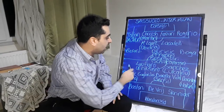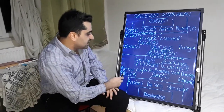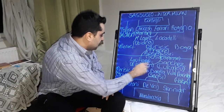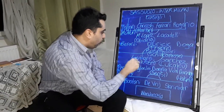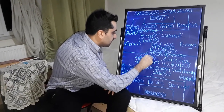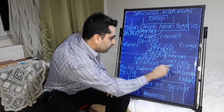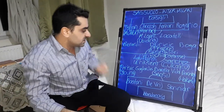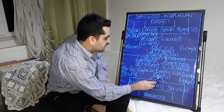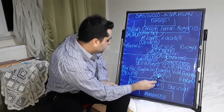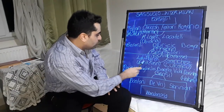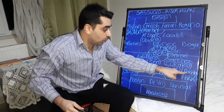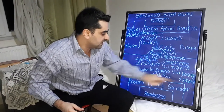In the 79th minute, Conte made substitutions: Sanchez and Lautaro came off, with Lukaku and Ashley Young coming on. Lukaku and Perisic then played together in attack. Conte also made further changes: Barella off, Sensi on in midfield; Perisic off, Eriksen on; and finally Darmian off, Hakimi in.